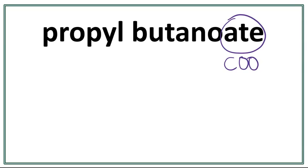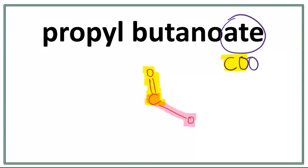When we draw this functional group, we end up with carbon double bonding oxygen — this is the first carbon and oxygen right here — and carbon having a single bond with this second oxygen right here. Now we have the functional group drawn in.